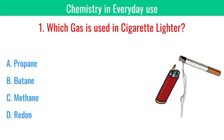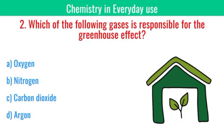Which gas is used in cigarette lighters? The correct answer is butane. Which of the following gases is responsible for the greenhouse effect? The correct answer is carbon dioxide.